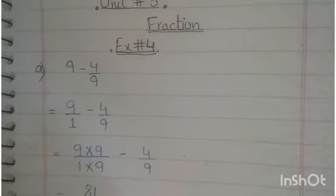4 by 9 you write as it is. Now you multiply: 9 multiply by 9 equals 81, and 1 multiply by 9 equals 9. Minus 4 by 9.